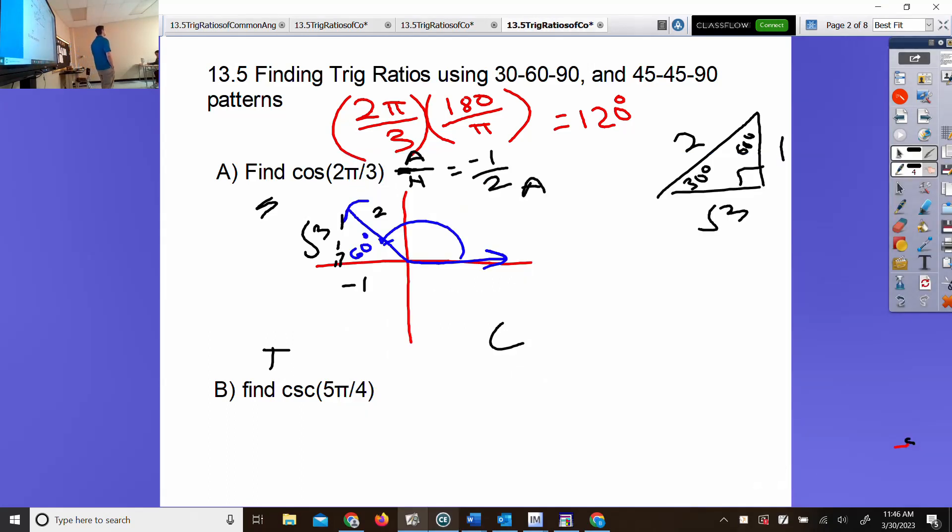B is cosecant of 5π/4. What do you want to do with 5π/4? Multiply by 180 over π. 5 over 4 times 45. You can always use the formula to get it into degrees.